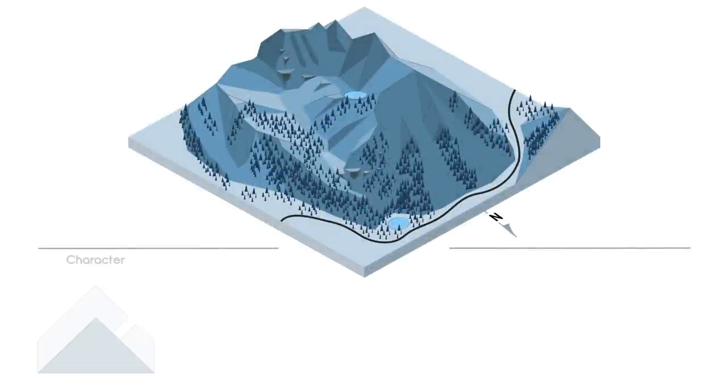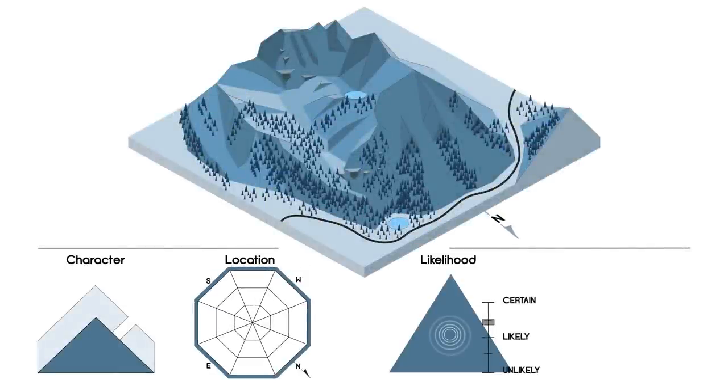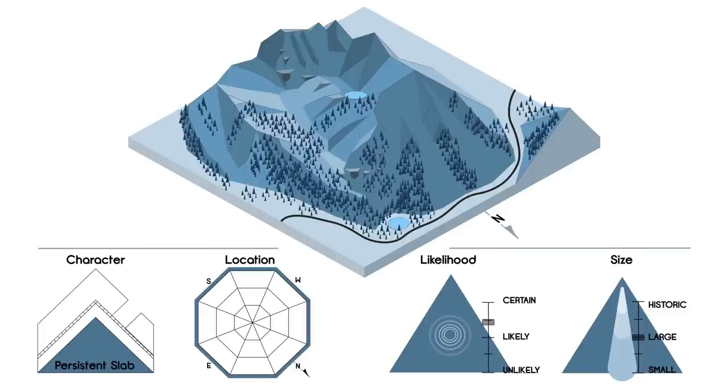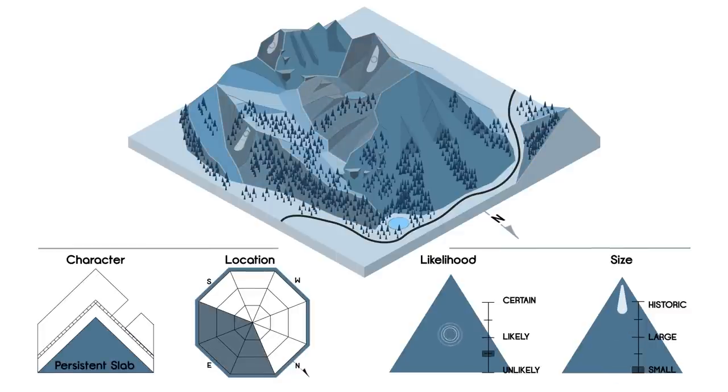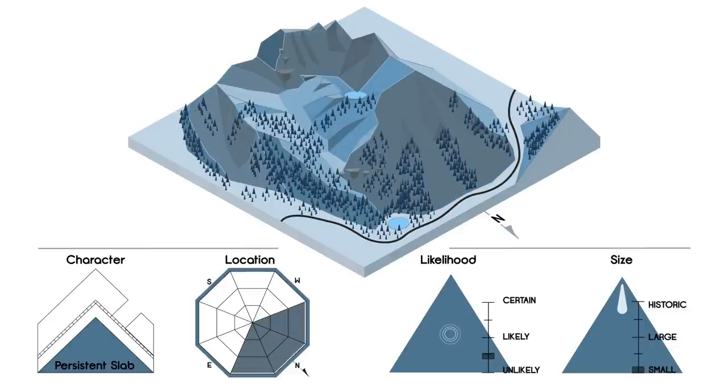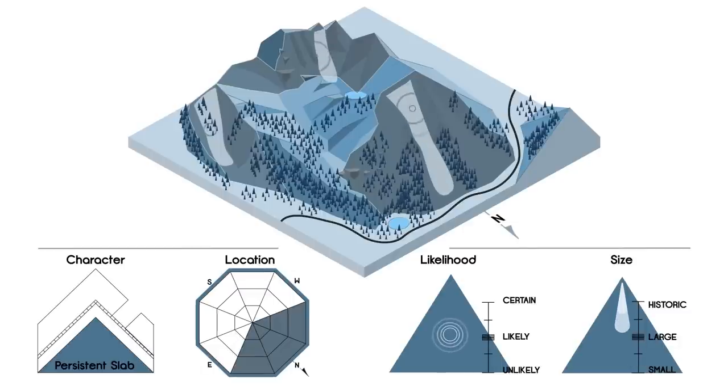These four elements combined illustrate the type of expected avalanche. For example, here is a persistent slab on east-facing slopes that is relatively small and is difficult to trigger. Here we see a change in the location, the size, and the likelihood.